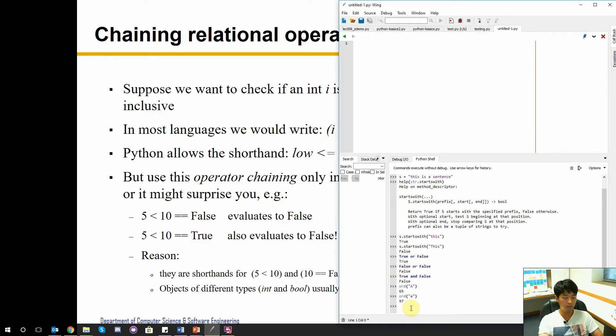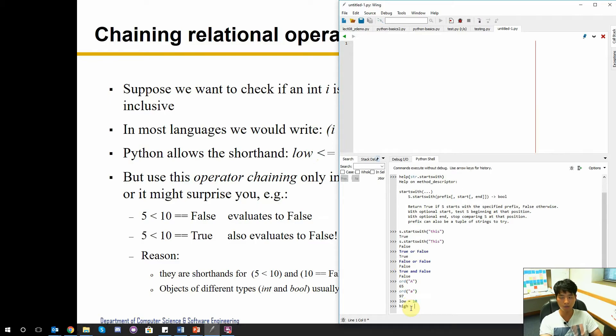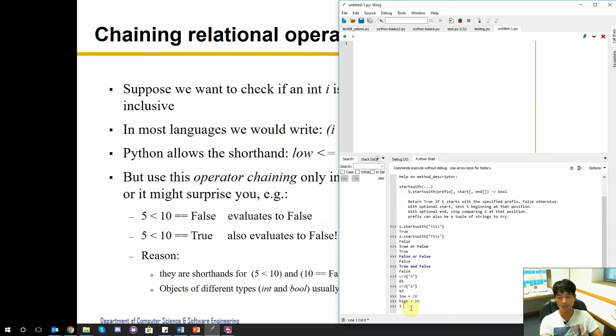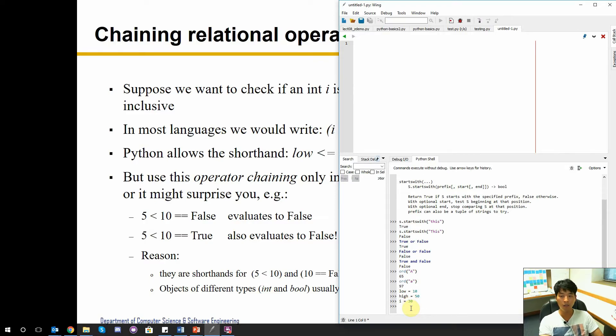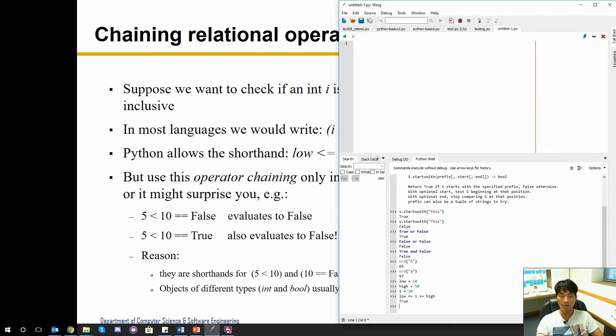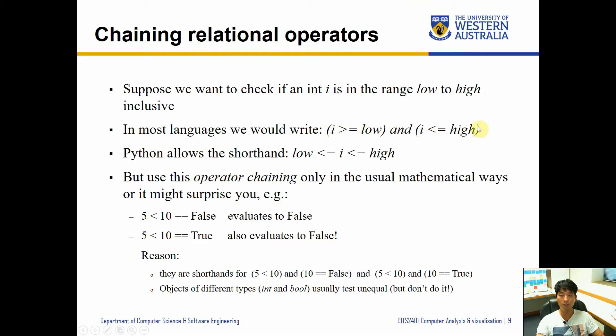Let's quickly do that. Let's create low equals 10, high equals 50, and we can arbitrarily set the value of i to something like 30. Then we check low less than equal to i less than equal to high. In Python it will automatically interpret it as equivalent to the one above and then evaluate whether it's true or false.